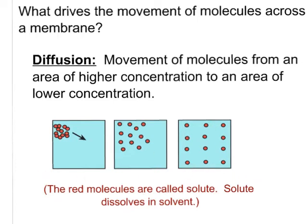In these diagrams, the red molecules are called solute. A simple phrase used a lot in science: solute dissolves in a solvent, and the solvent dissolves the solute. The thing that gets dissolved is called the solute.